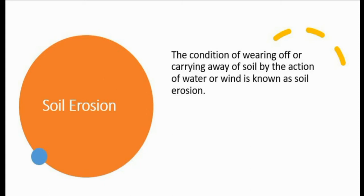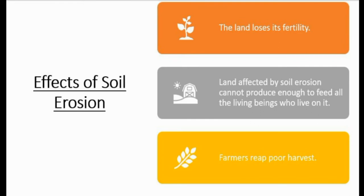As a result of soil erosion, the land loses its fertility. Land affected by soil erosion cannot produce enough food because the soil is being blown away. So it cannot produce enough food for all the living beings who depend on it, and farmers reap poor harvests — they are also badly affected by it.